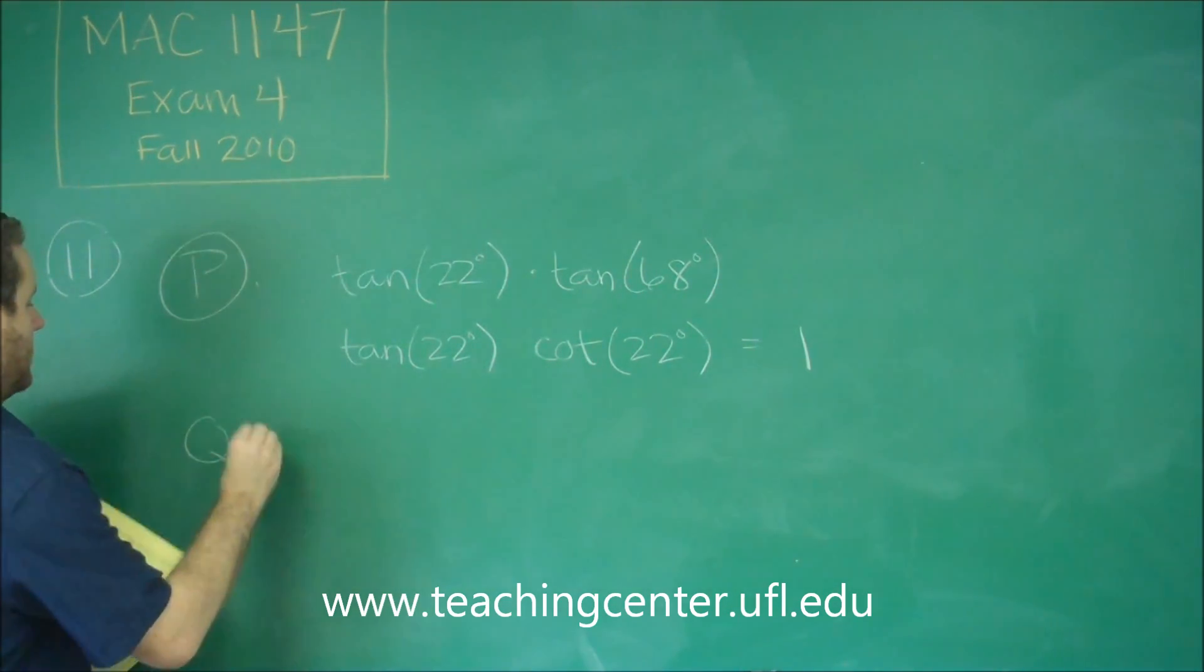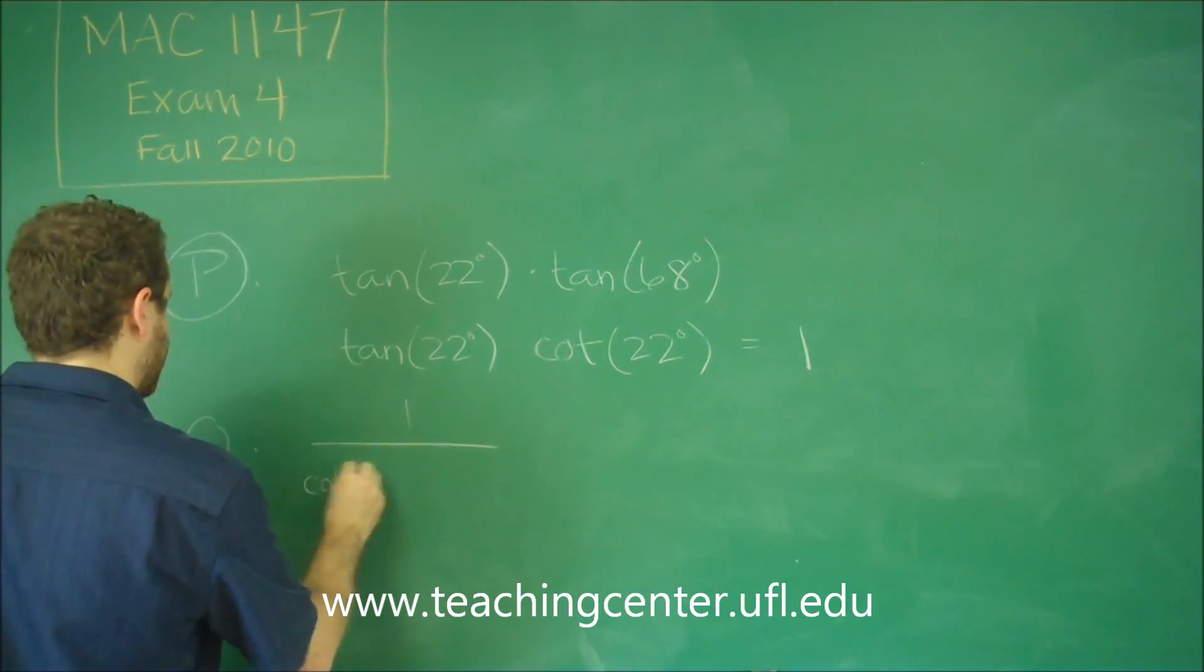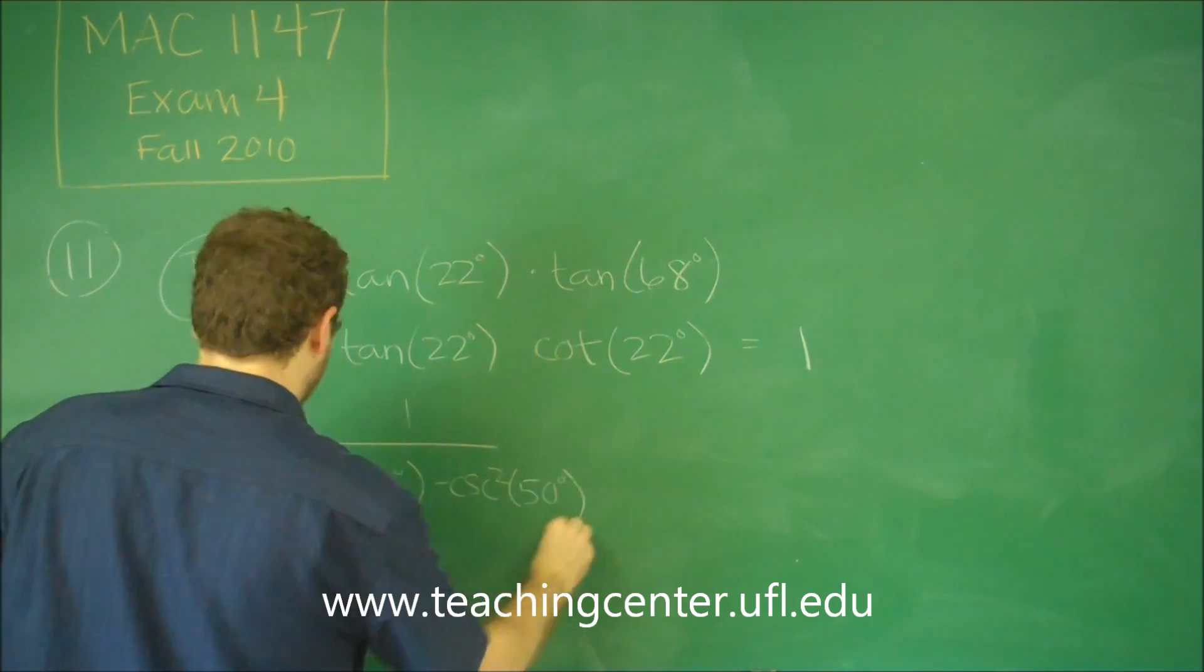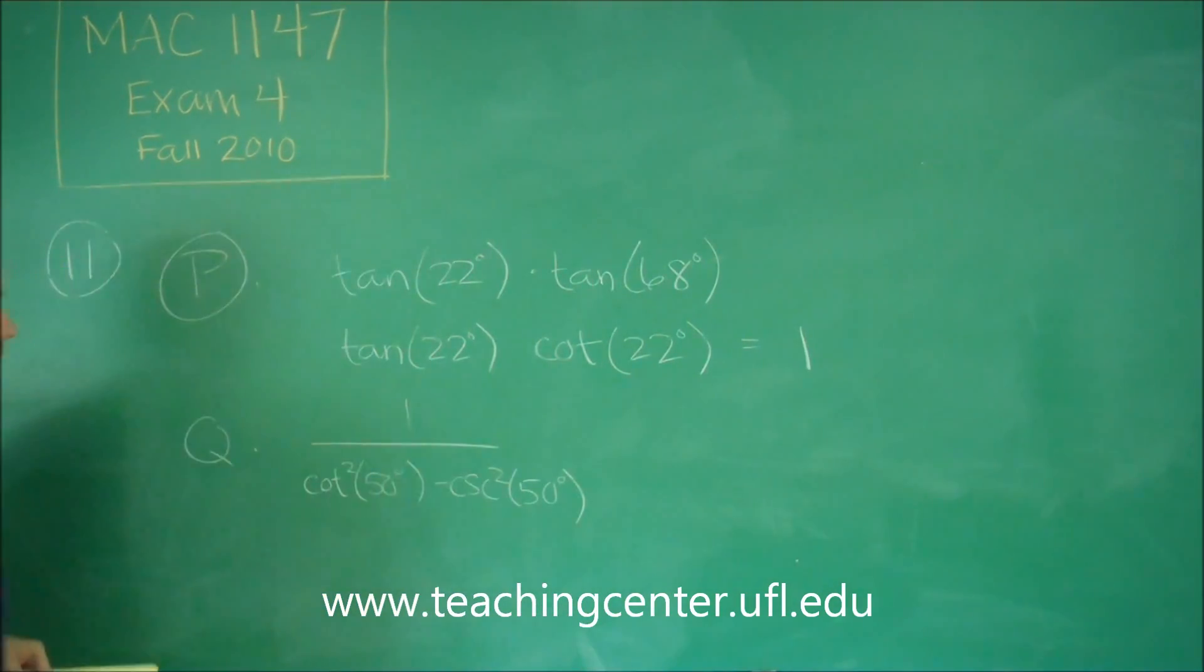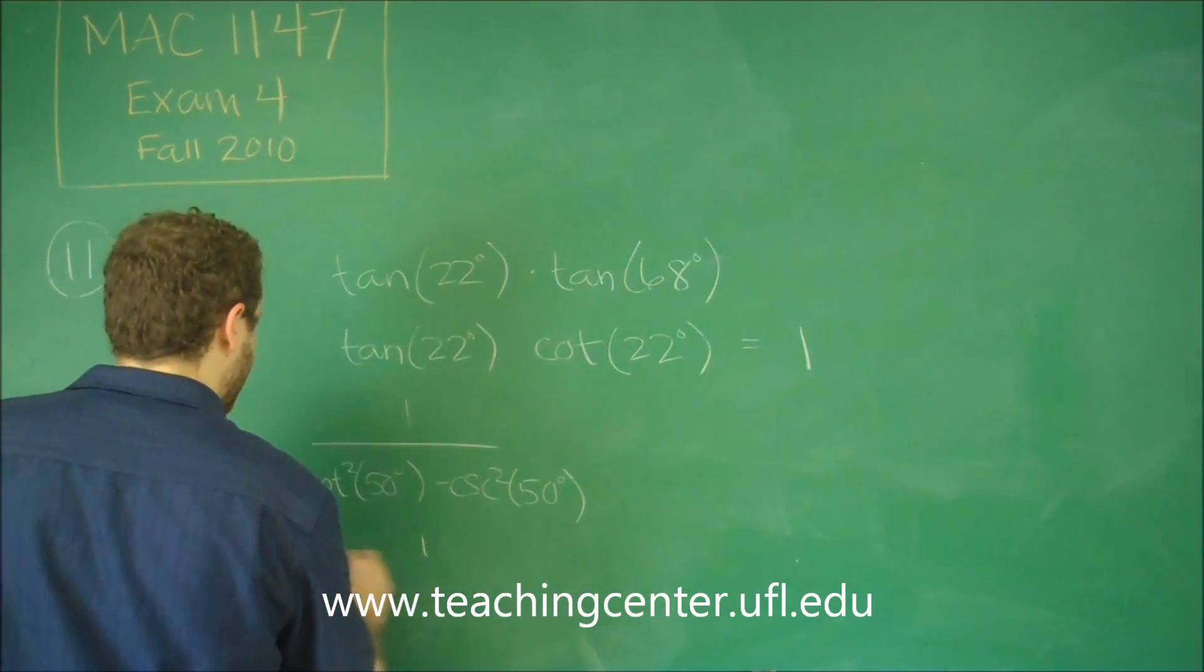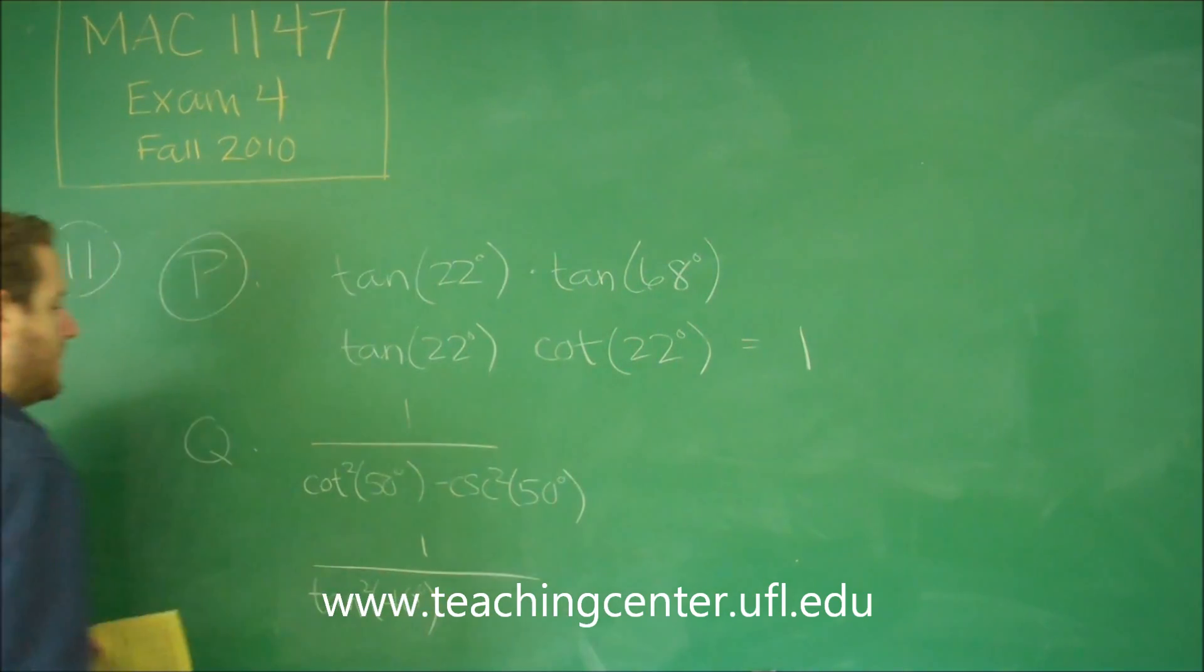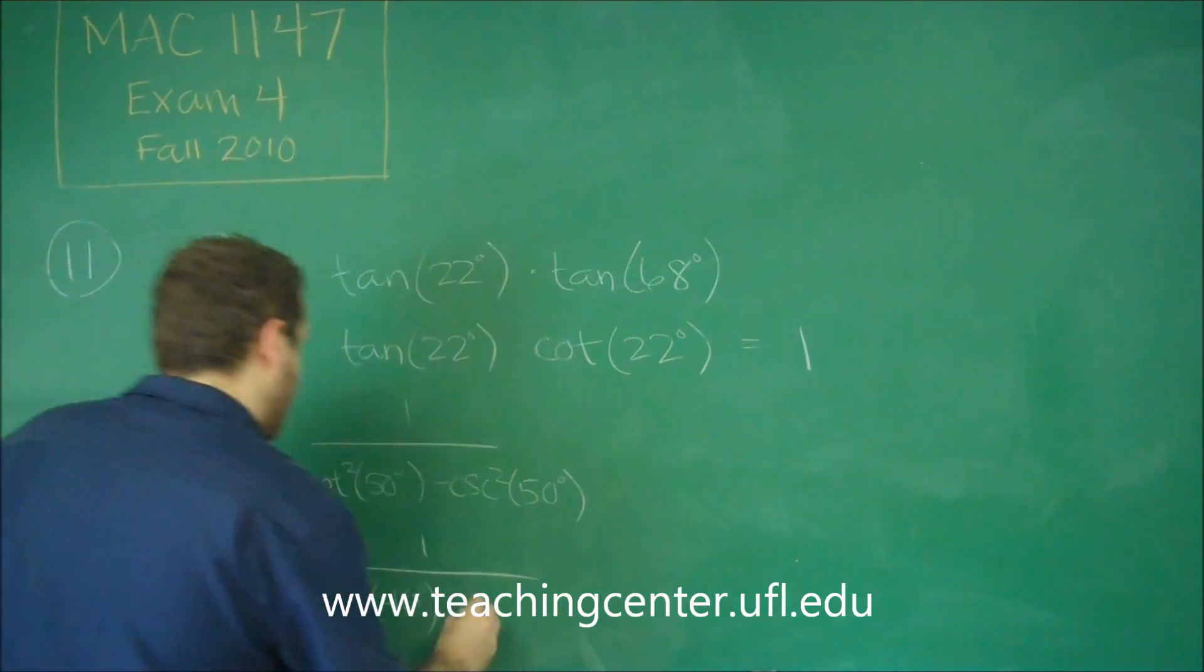Let's try statement Q. So here we have one over cotangent squared of 50 degrees minus cosecant squared of 50 degrees. For this one, let's change this into more manageable angles. Cotangent squared of 50 is the same thing as tangent squared of 40, because that's the complementary angle. And cosecant squared of 50 is the same thing as secant squared of 40, because those are complementary angles.